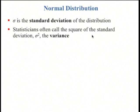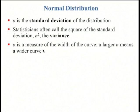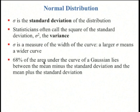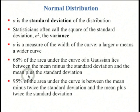Statisticians also sometimes talk about the variance, which is sigma squared. We don't use that in this course too much though. Sigma is a measure of the width of the curve. Larger sigma means a wider curve. And 68% of the area under the curve of a Gaussian lies between the mean minus the standard deviation and plus the standard deviation. And 95% of the area under the curve is between the mean minus twice the standard deviation and the mean plus twice the standard deviation.